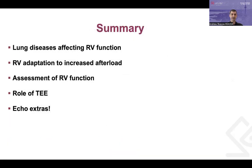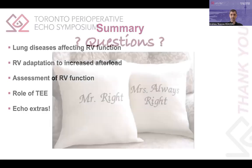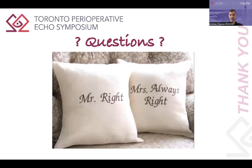In summary, we've covered lung diseases affecting the right heart and how the right heart may or may not adapt. We've looked at the various methods for assessing RV function with TEE and their pros and cons. And finally, I've provided a few echo extras that we can measure if time allows. Thank you very much.